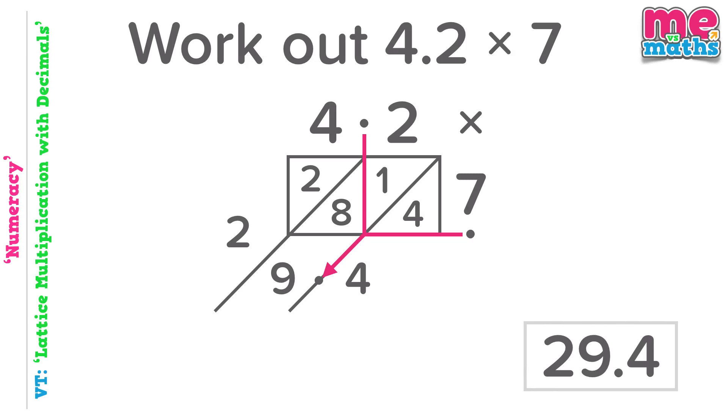It's always worth checking that these answers make sense. If you go back to our original question, 4.2 is a little more than 4. 4 times 7 is 28, so our answer should be a little larger than 28 and sure enough 29.4 is, so it makes perfect sense.